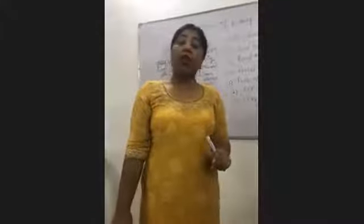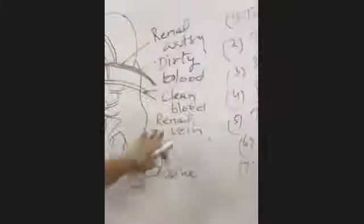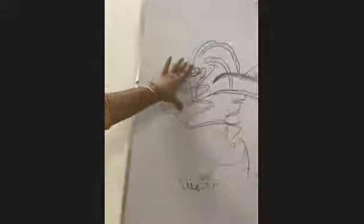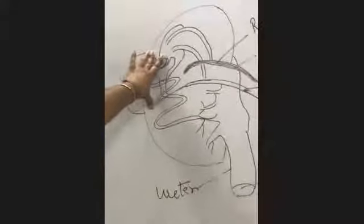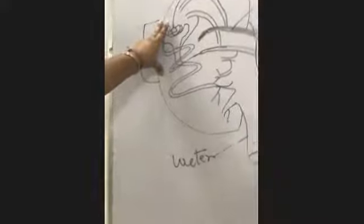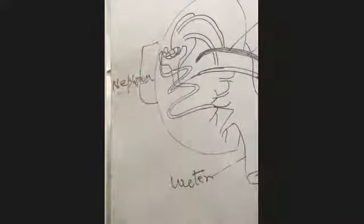So we have dirty blood coming in and clean blood going out of our body structure. This structure which is our nephron — what we call the excretory unit — this structure is called the nephron. We have already told you that the nephron is the excretory unit. In the diagram we have shown only one nephron, otherwise there are many nephrons.